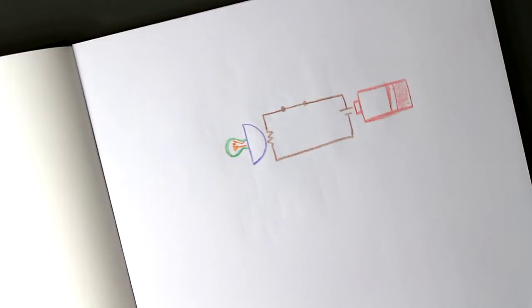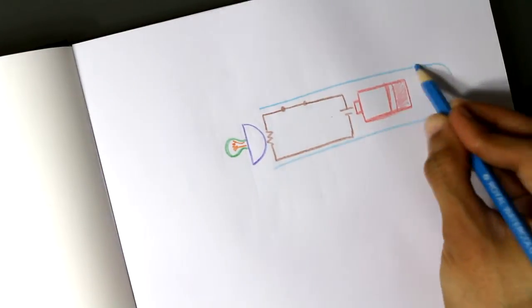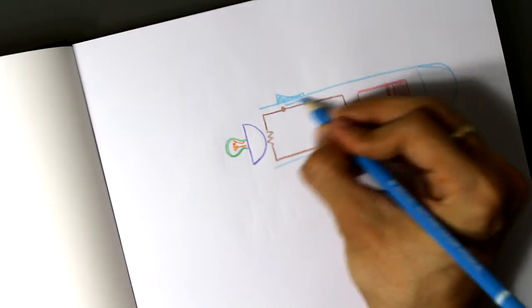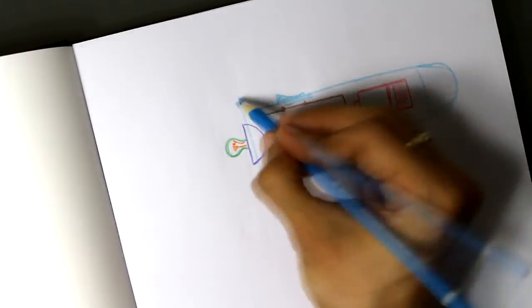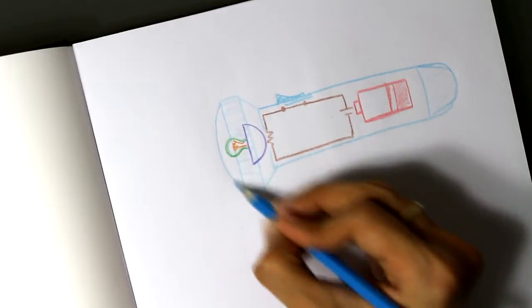When the switch is off, a complete circuit does not exist and there is no flow of current. But when the switch is on, a complete circuit is formed and current can flow, resulting in the flashbulb emitting light.